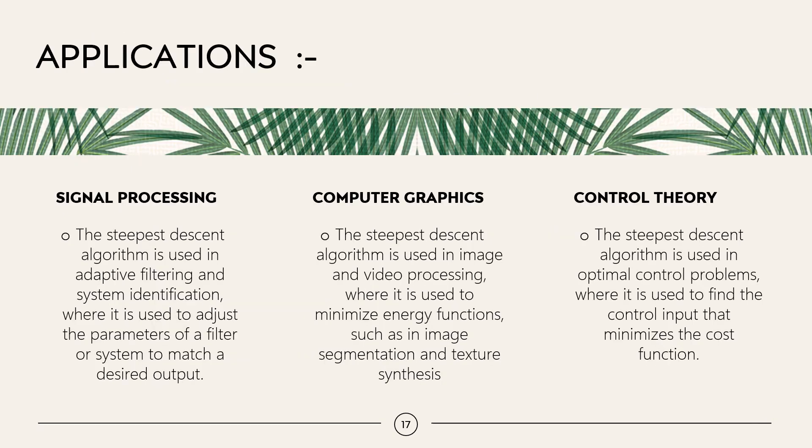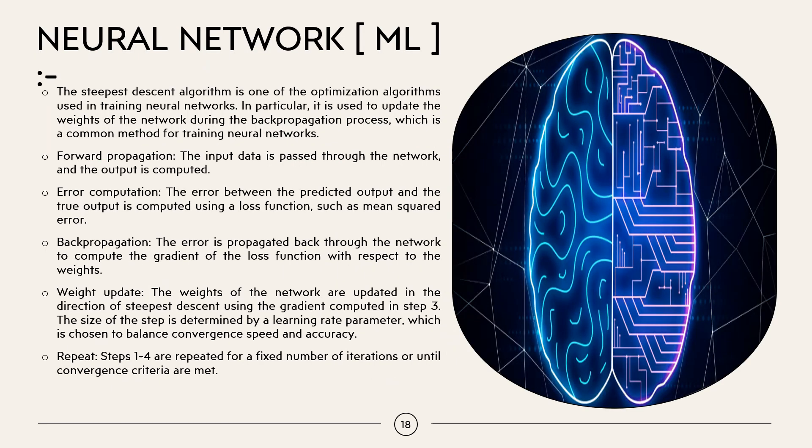Applications are Signal Processing, Computer Graphics, Control Theory. The steepest descent algorithm is used in adaptive filtering and system identification where it is used to adjust the parameters of the filters or systems to match a desired output. Computer Graphics: The steepest descent algorithm is used in image and video processing where it is used to minimize the energy function such as image segmentation and texture synthesis. Control Theory: The steepest descent algorithm is used in optimal control problems where it is used to find the control input that minimize the cost of the gradient function.